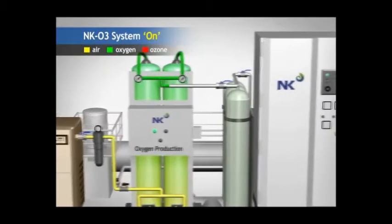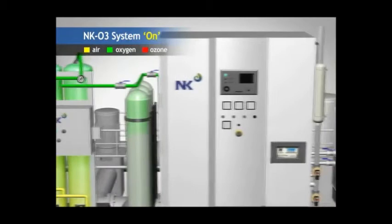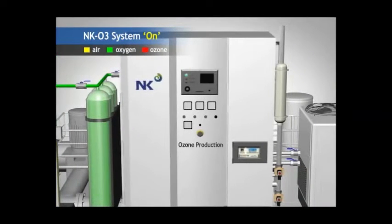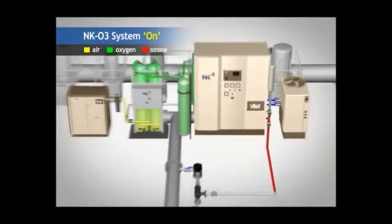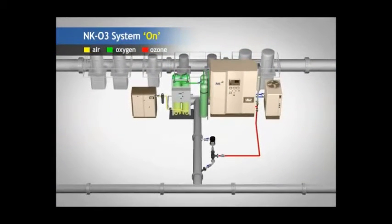Oxygen is then produced and fed into the ozone generator. Next, ozone is fed from the ozone generator to the ozone injector. The ballast pump is turned on, and ballast water begins to be pumped into the ship.